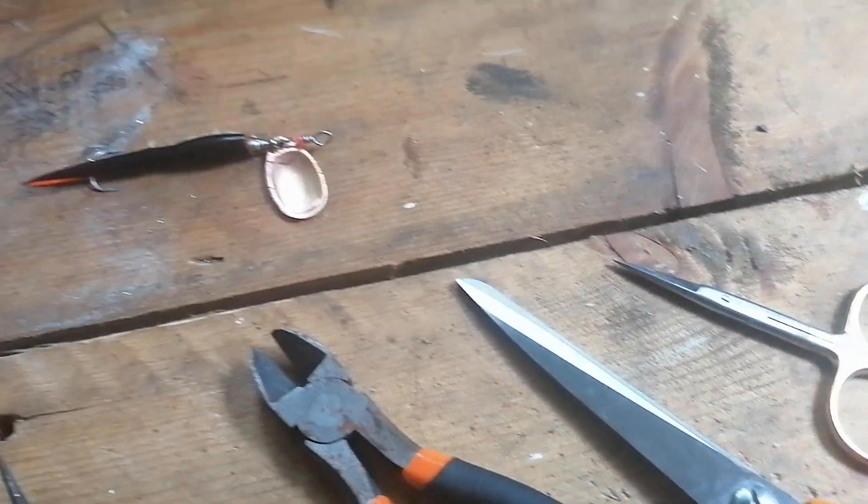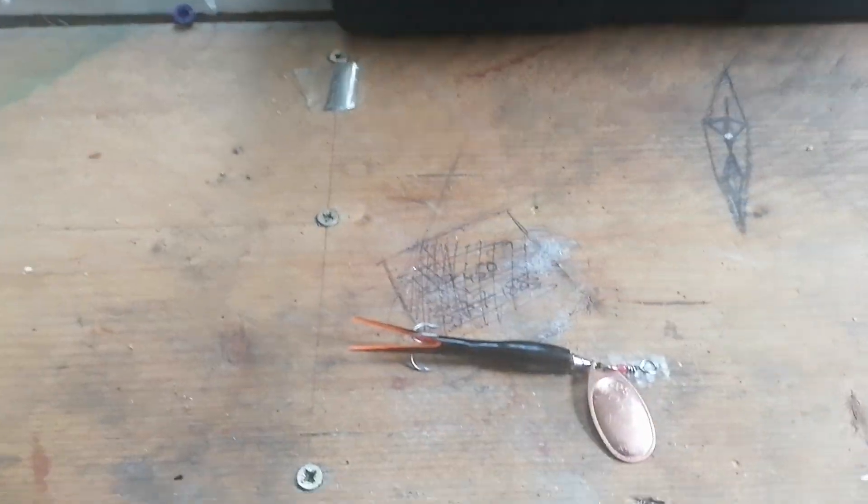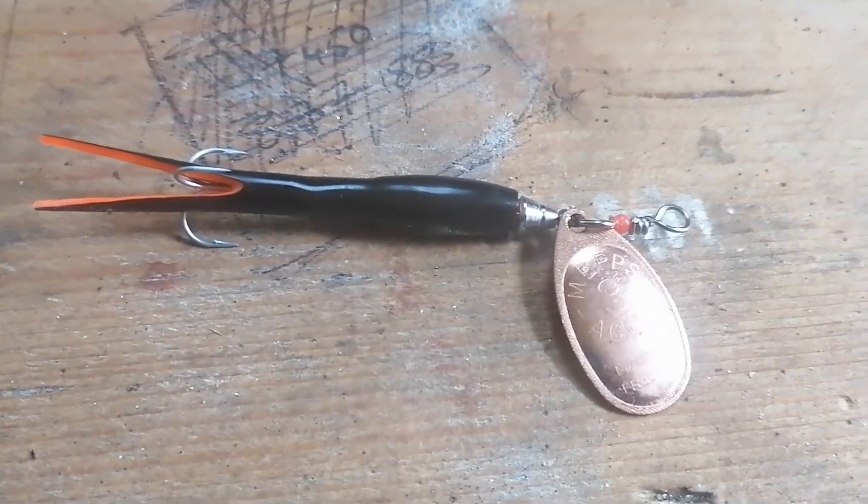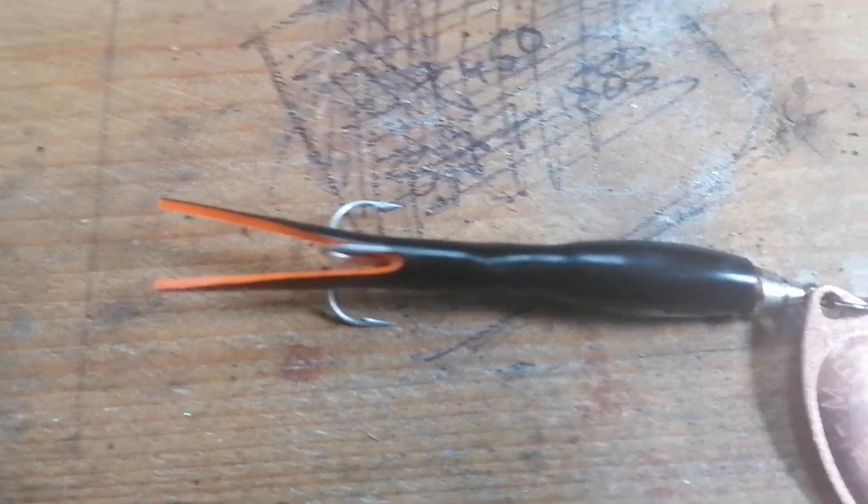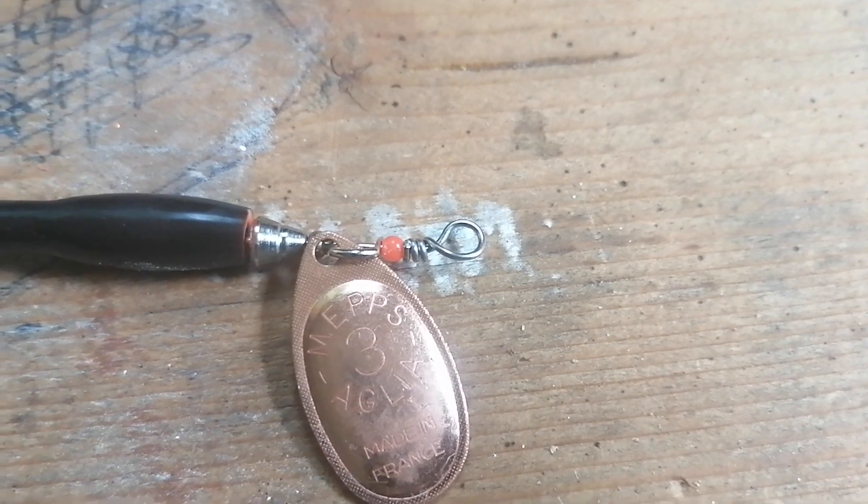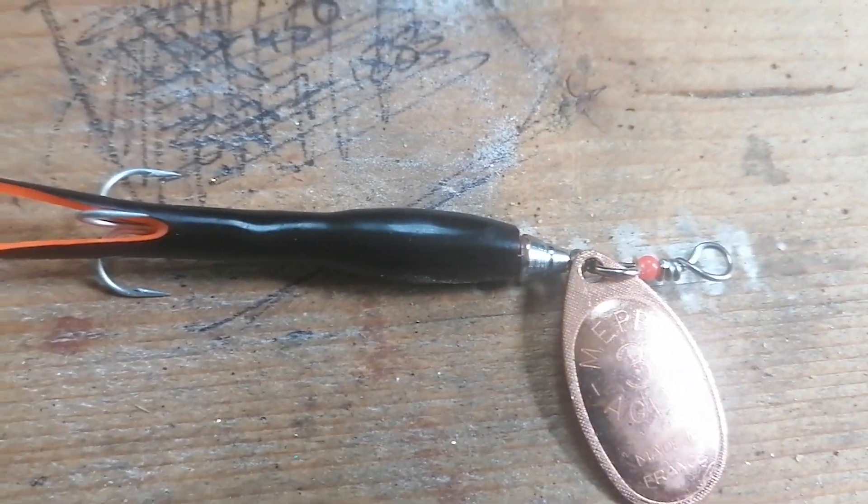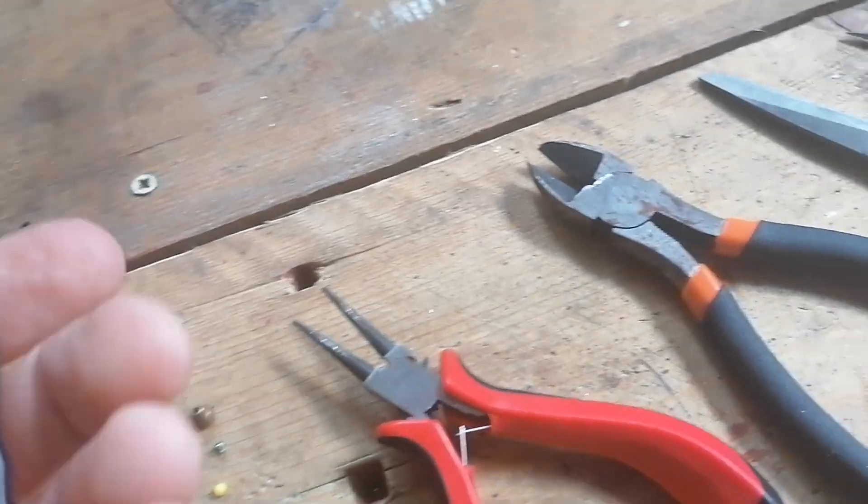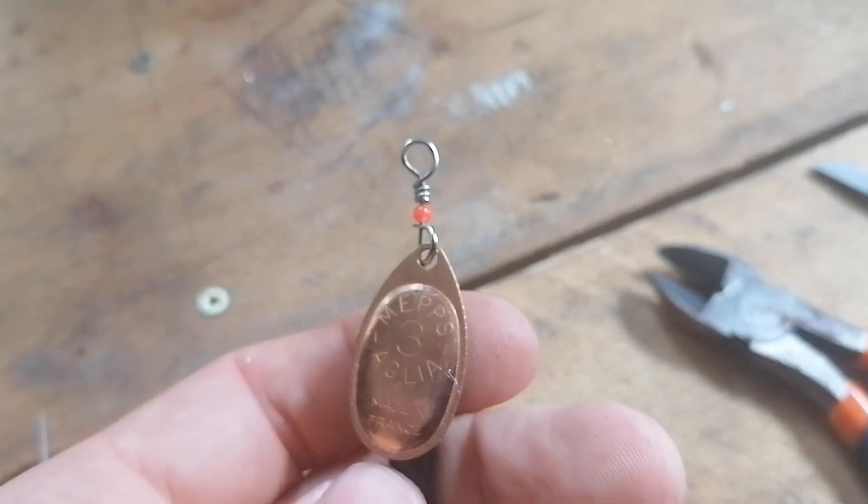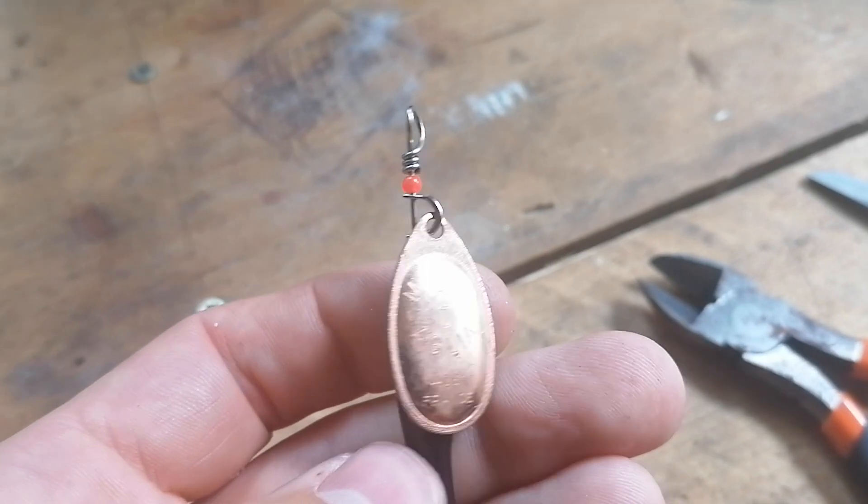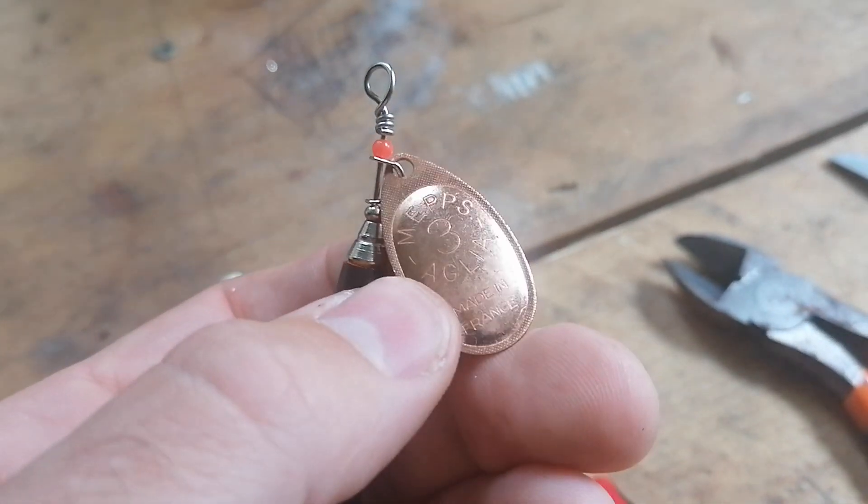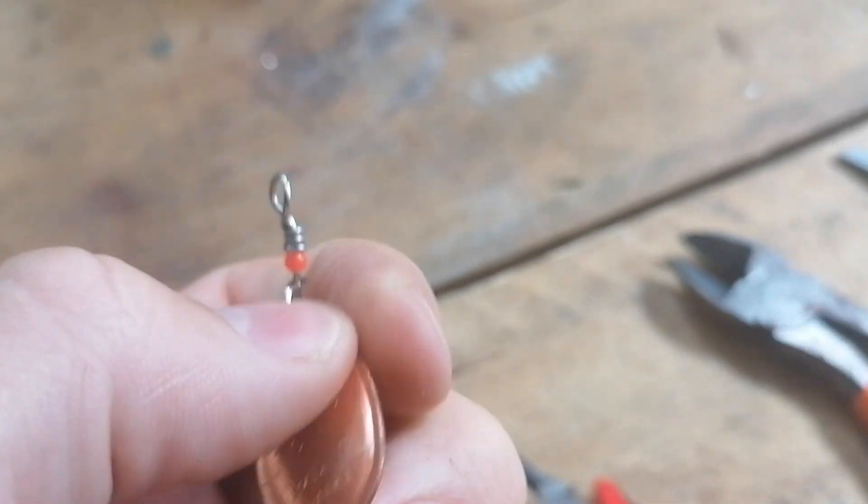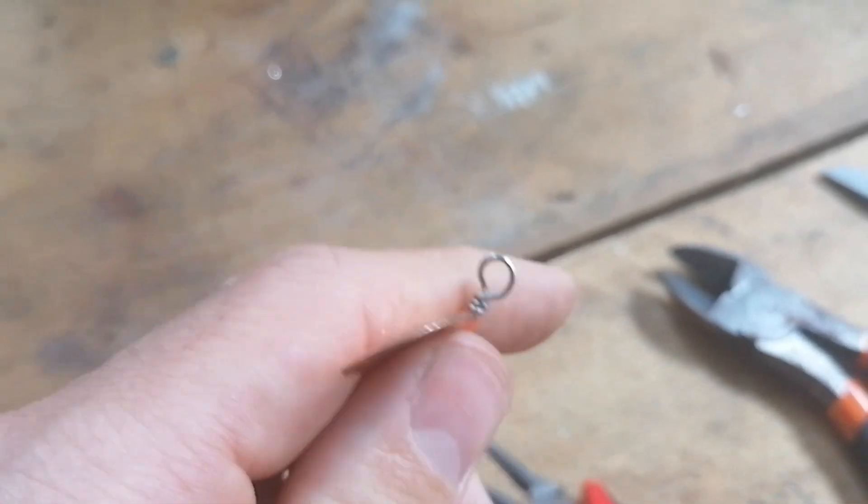Without a doubt you can make a far better quality of lure than you can buy. Most of the Flying Cs that you see in shops are of very poor quality and very poorly made. What we're going to make here is going to be something really a bit neater than anything you can buy. It's going to turn out something like that. Nice, neat, short tails, nice profile.